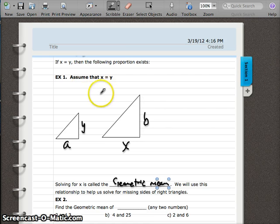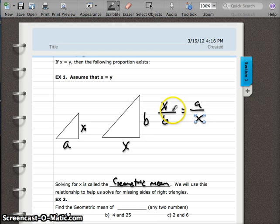And I'll show you what that looks like. If we say that x equals y, well, then we don't have to use y anymore. We can instead write the same x. And so now what we have is x over b equals a over x, or a over x equals x over b.